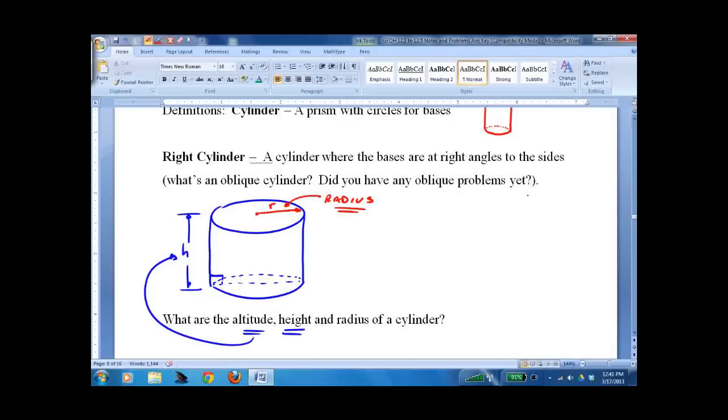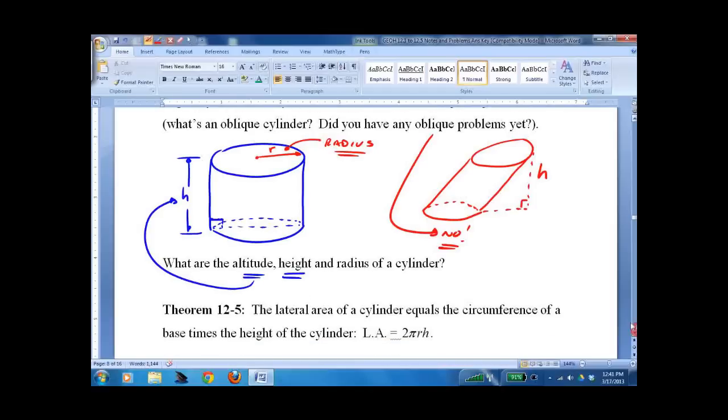What would be an oblique cylinder? Something that's like smooshed sideways. Like a slinky if you take it and push over the side. Do we have any oblique problems yet? No. We really don't deal with these very much. In this case the right angle would be there. But we haven't really dealt with those much. And we're not going to. They're not something that pops up much in the real world and certainly not in our class.